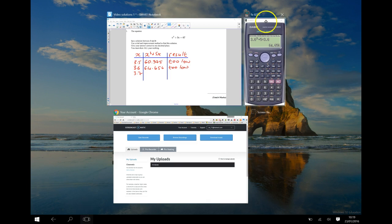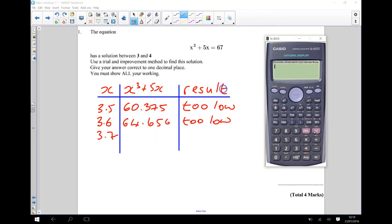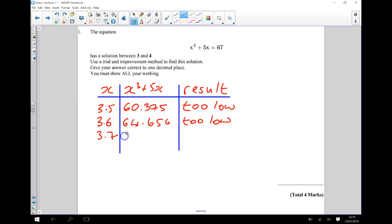Try that. 3.7 cubed plus 5 times 3.7, and that gives me 69.153. Now that there is going to be higher than 67, so that's too high.